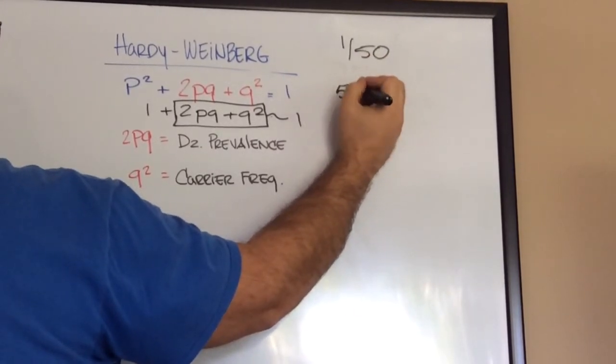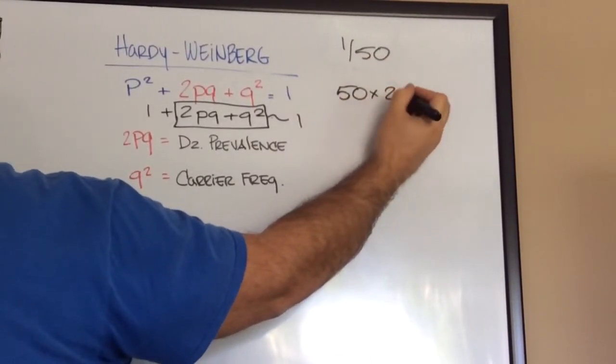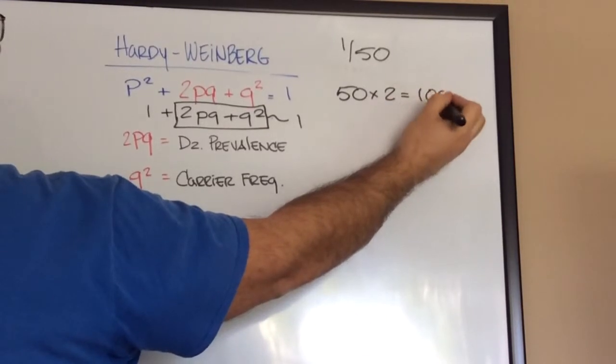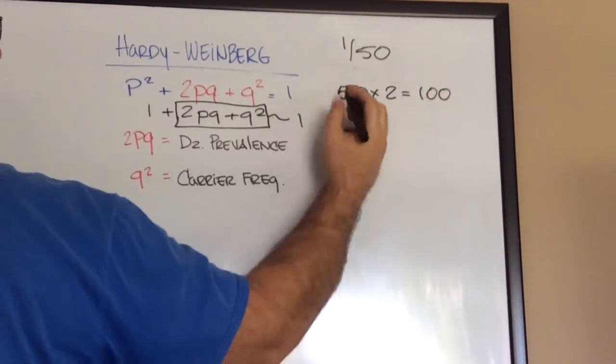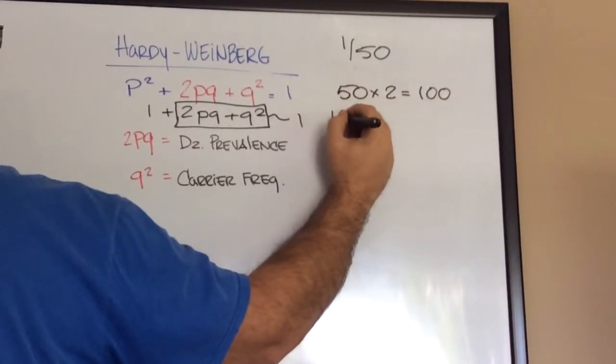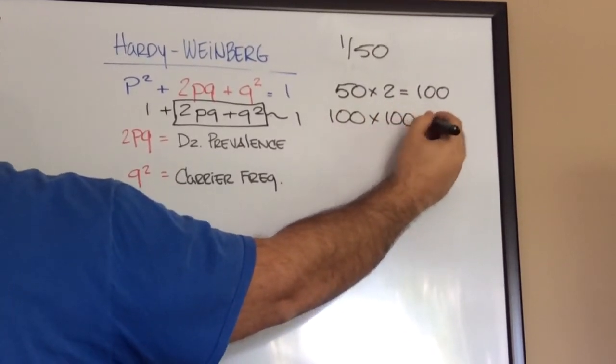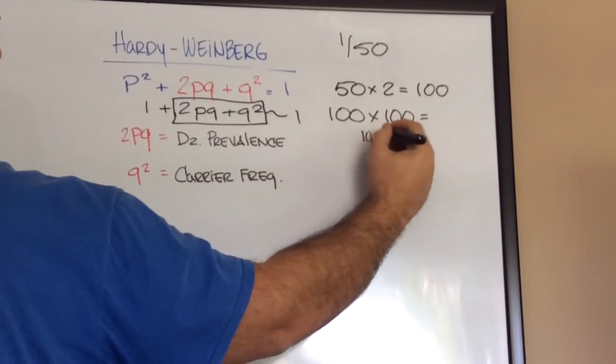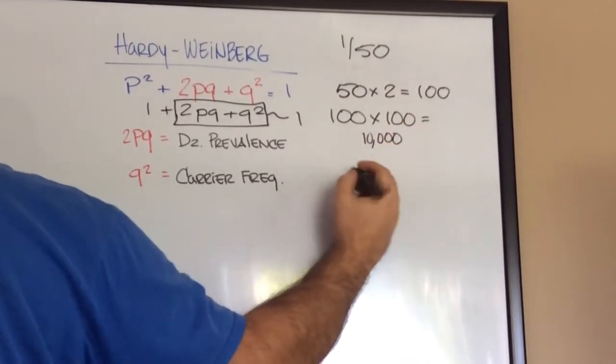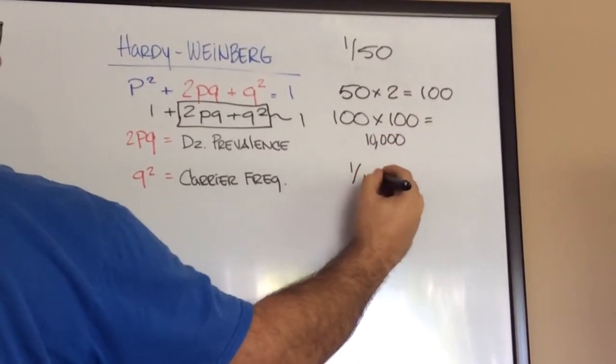50 times 2 equals 100. Great. Now, 100 times itself equals 10,000. And there's your disease prevalence, 1 in 10,000. And that's it.